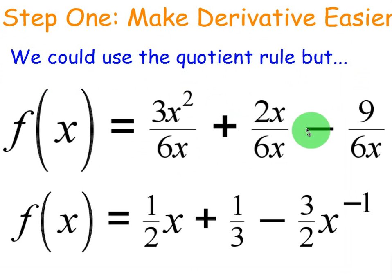Right off the bat let's just distribute the 6x into each term in the top. So you have 3x squared over 6x plus 2x over 6x minus 9 over 6x. You get one half x plus one third, and then that will become three halves, and then x is in the bottom so we'll make it to the negative 1.